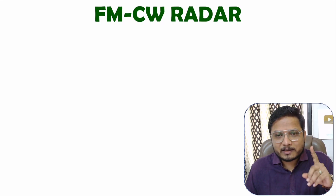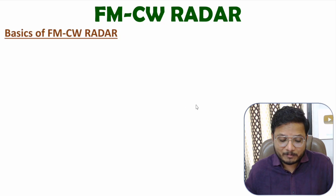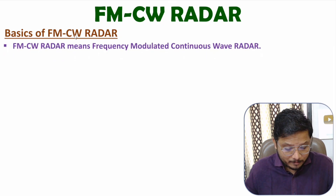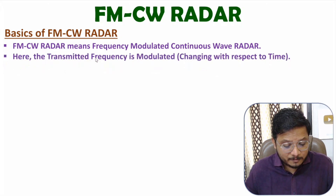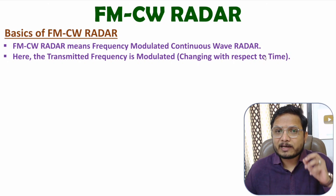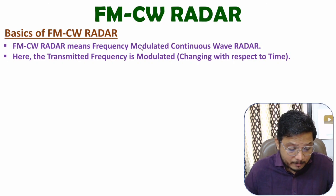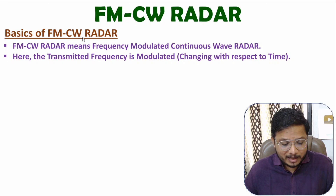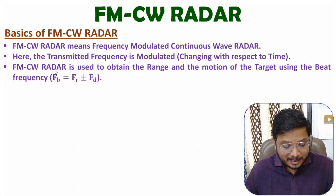Let us begin with the basics of FMCW radar system. FMCW means Frequency Modulated Continuous Wave radar. This system is a CW radar system, but here the transmitted signal is frequency modulated, meaning the transmitted frequency changes with respect to time. In a basic CW radar system, we transmit constant frequency, whereas in FMCW, the transmitted frequency changes with respect to time. Based on FMCW radar, we can identify range as well as motion of the target using beat frequency.